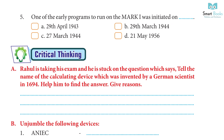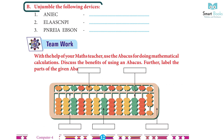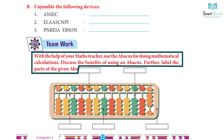Critical Thinking: A. Rahul is taking his exam and is stuck on the question: 'Tell the name of the calculating device invented by a German scientist in 1694.' Help him find the answer. Answer: German scientist Gottfried Wilhelm Leibniz created the Step Reckoner, sometimes referred to as the Leibniz Calculator, in 1672 and finished it in 1694. B. Unjumble the following devices. Answers: 1. ENIAC. 2. Pascaline. 3. Napier's Bone. Teamwork: With the help of your maths teacher, use the abacus for doing mathematical calculations. Discuss the benefits of using an abacus. Label the parts of the given abacus.